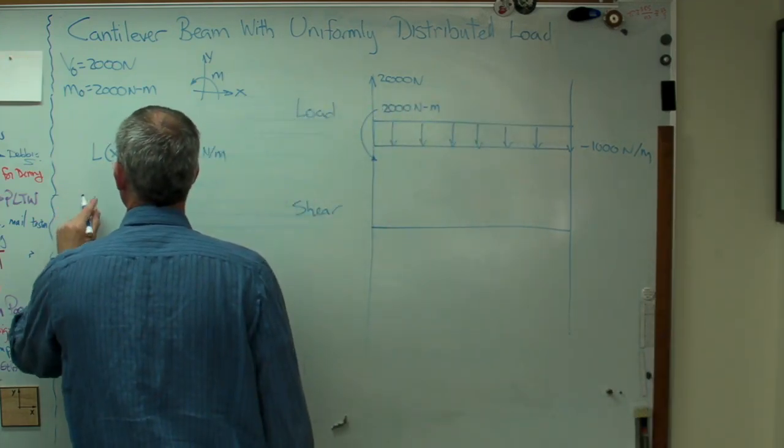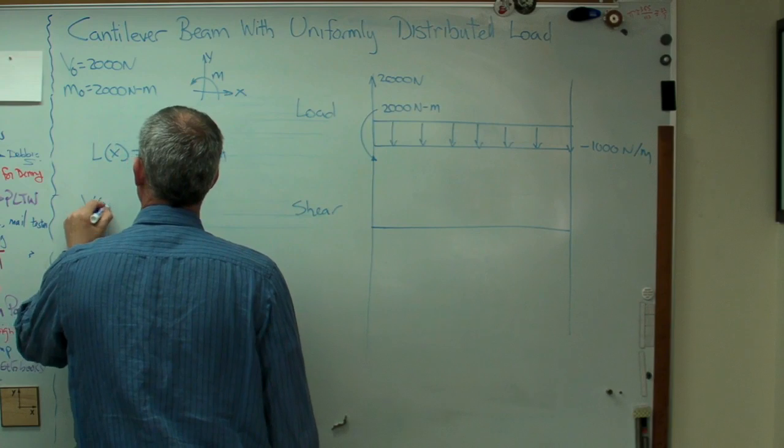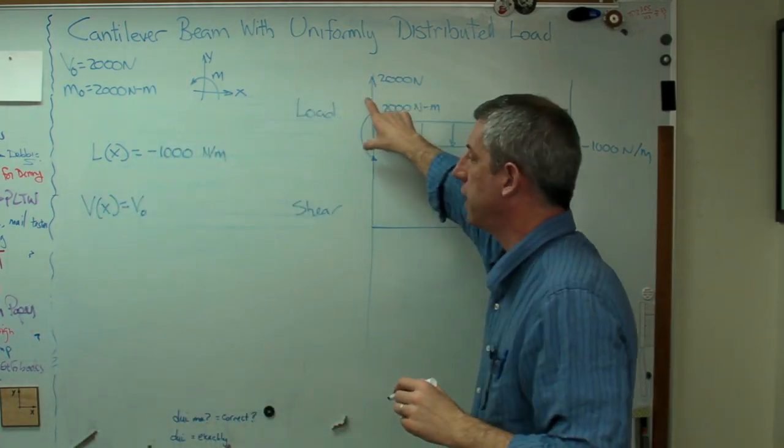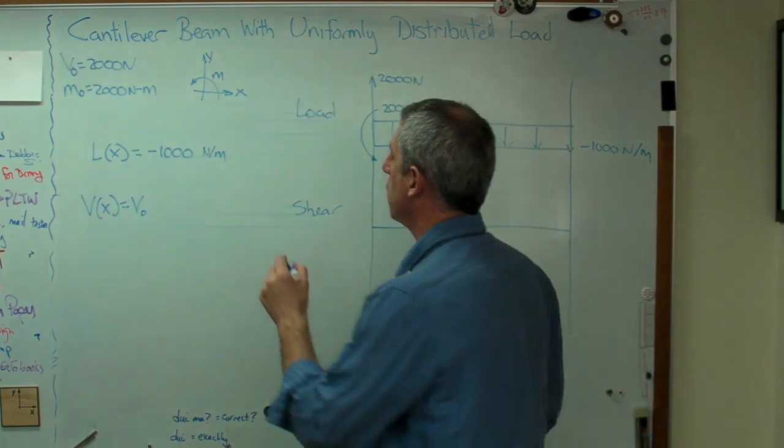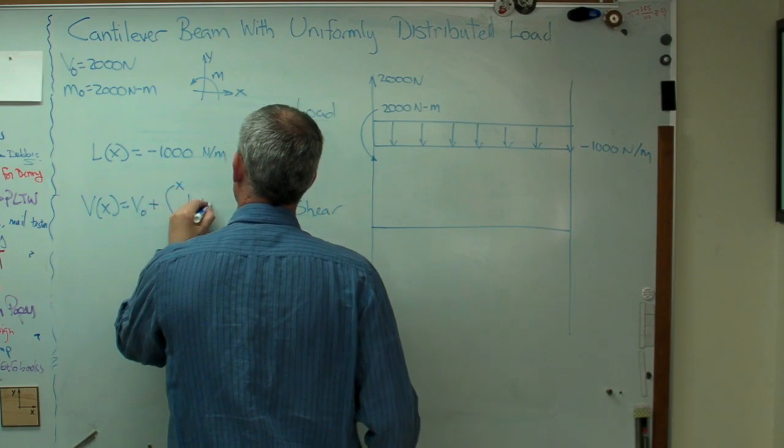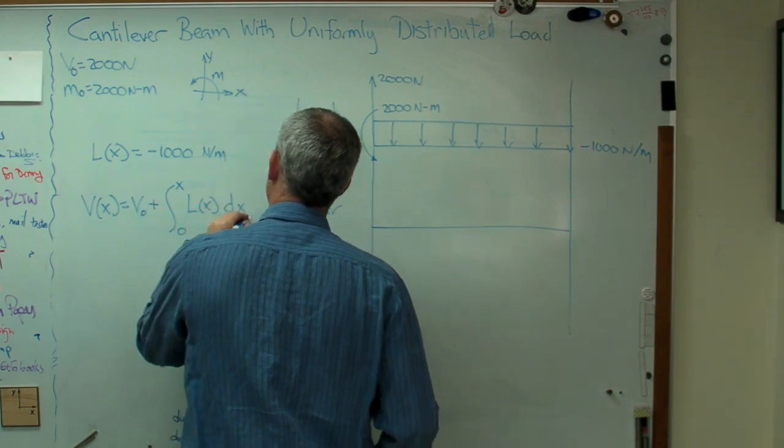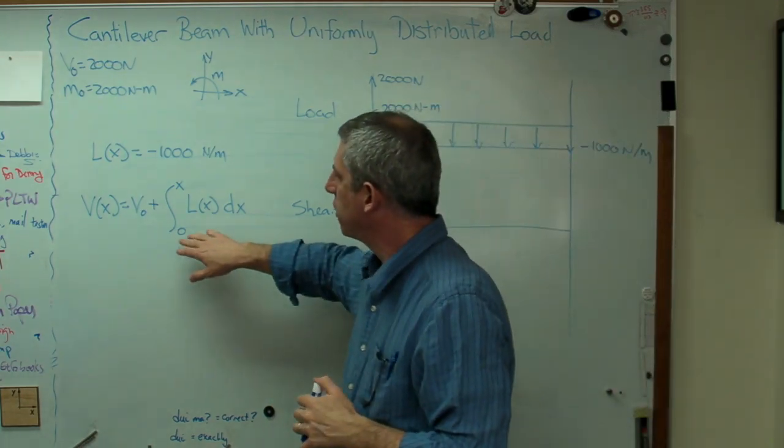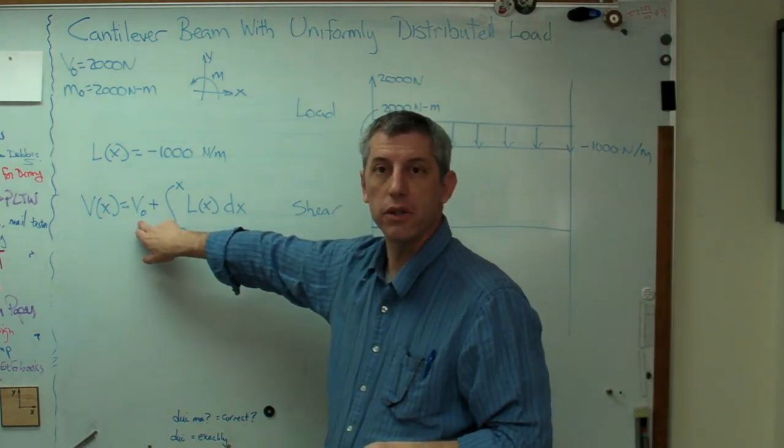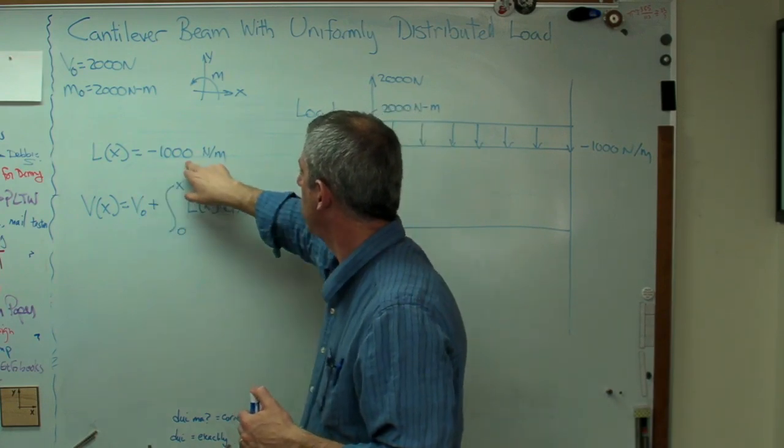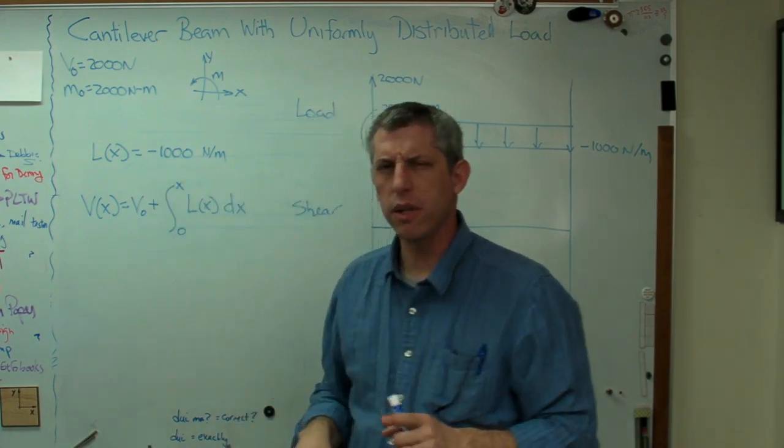All right. Well, the shear function is just going to be V0, which is the initial shear right there, plus an integral 0 to x, L(x) dx. Now, before I figure this out, and it's pretty easy to figure out, let's take a look at what this means. V0. Okay. That's the initial shear that's happening right there. L of x. That's just that number right there.